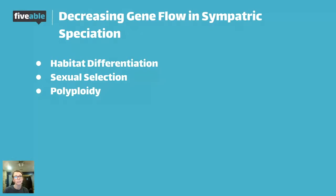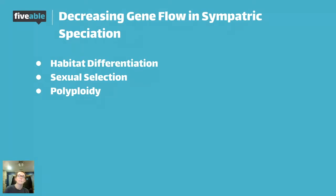Another major way to decrease gene flow within one single area is sexual selection, where females choose males based on their appearance — the females are the choosy ones. Like cardinals: only the male cardinals are the brilliant red ones we see; females are kind of a brownish color. Same with peacocks — it's the male peacocks that have the beautiful tails. Lions, if you think about their mane — all of those are sexual selection preferences. If organisms are living in the same environment and some just prefer one sort of appearance over another, that would be a good example of sexual selection.